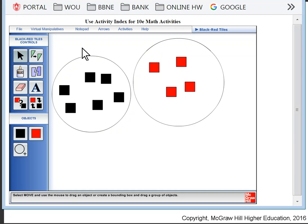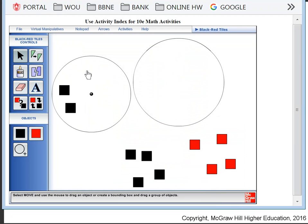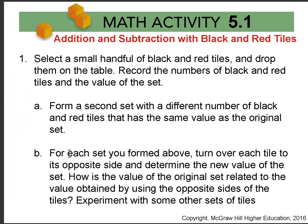I see that if I select these 4 black and these 4 red, that's a value of 0. So the net value of my collection is positive 2. After you've made your random sets, flip them over if you have tiles that are black and red on opposite sides, or just switch tiles, and see what happens.